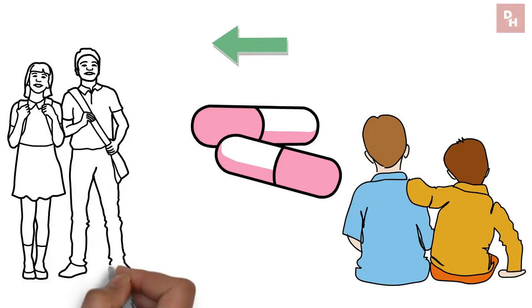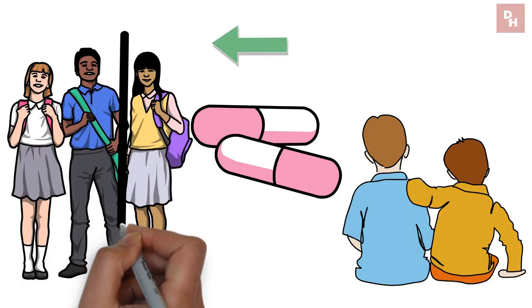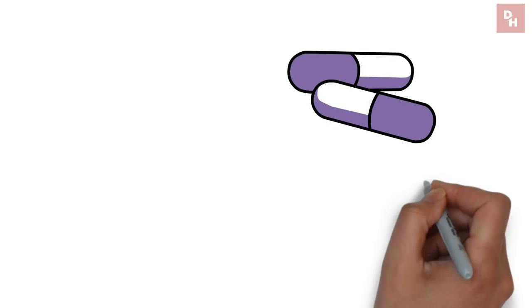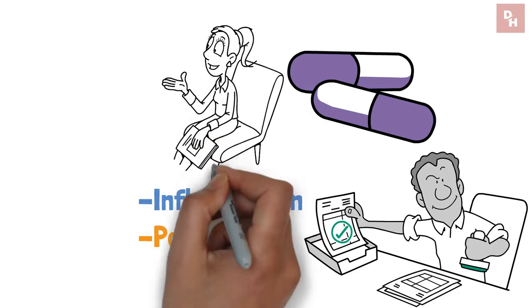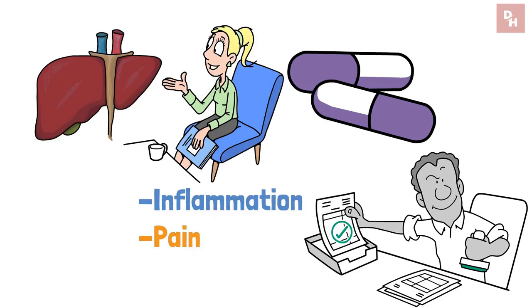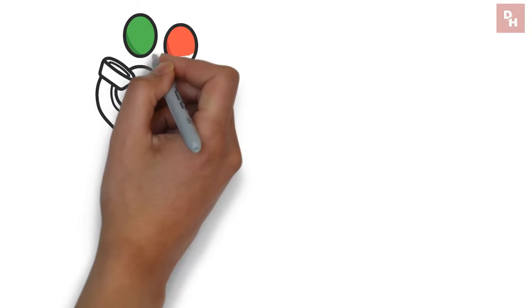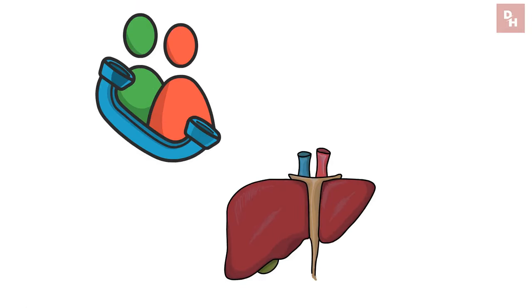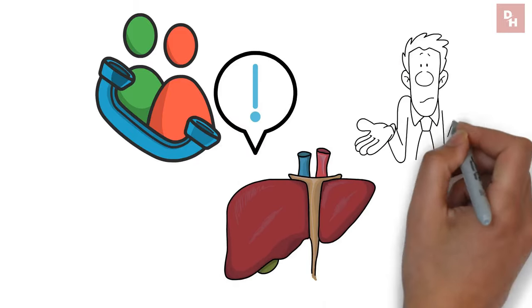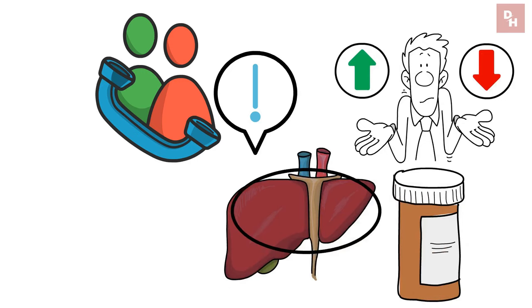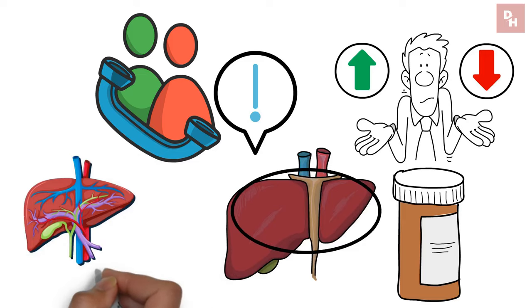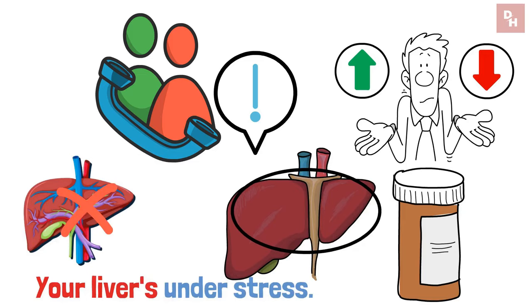They're like the trusty friends we call on in times of need. But here's the thing. Just like any friendship, there needs to be boundaries. These pills do a fantastic job at dialing down inflammation and pain, but they're also having a little chat with your liver every time you take them. And if you're calling on them too often, your liver might start to feel a bit overwhelmed.